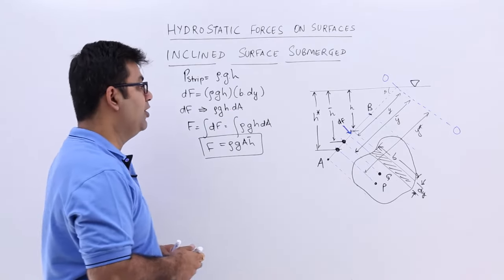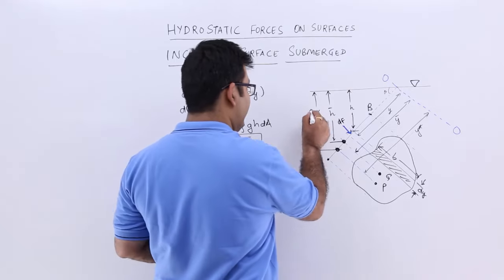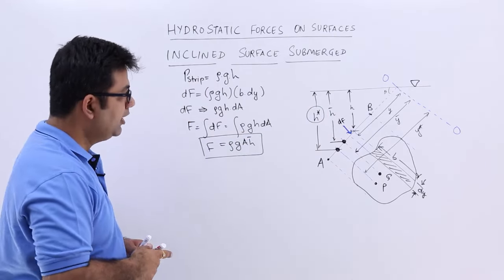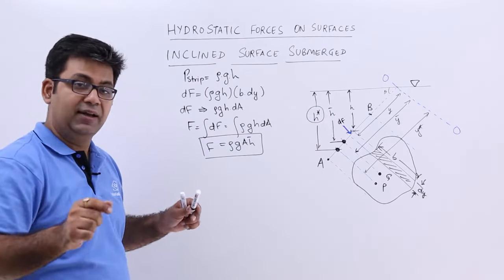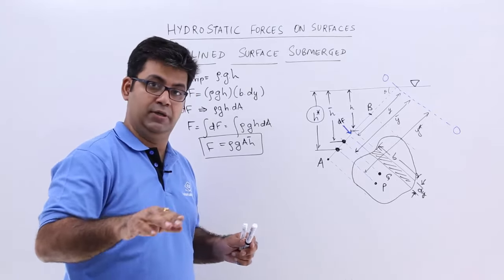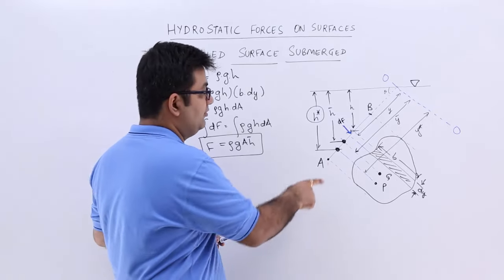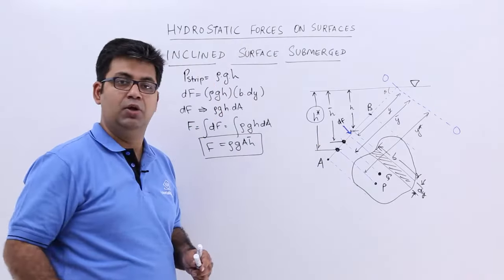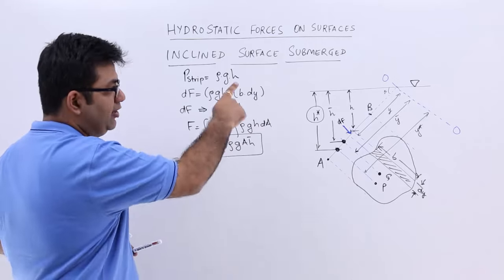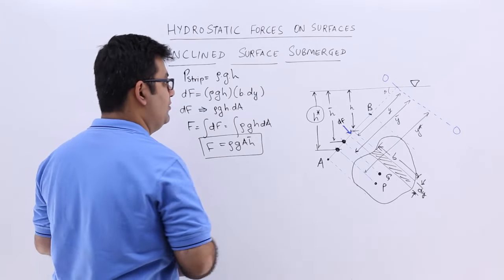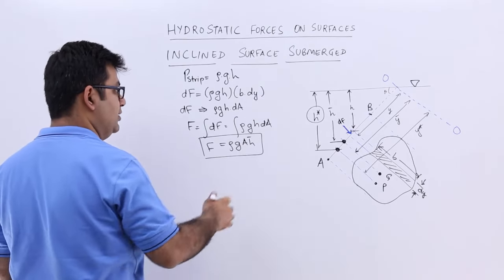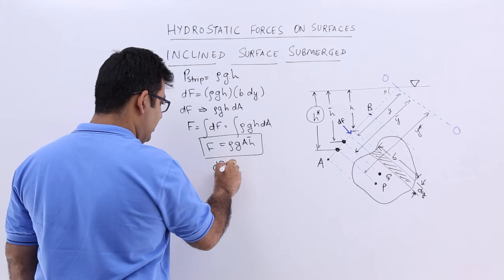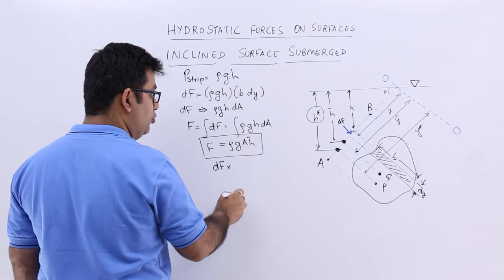Now comes the point where we start finding h-star. For that, let us find the moment of this force about line OO. That moment is dF times y.